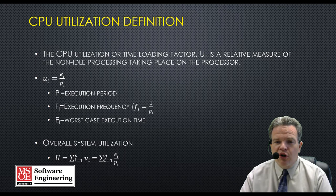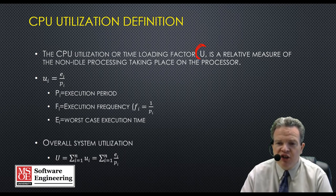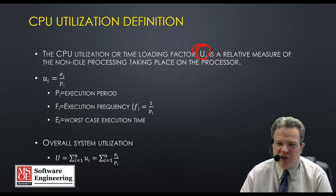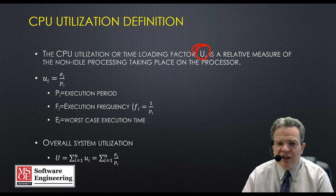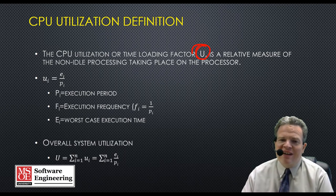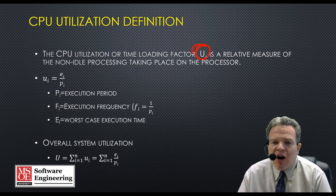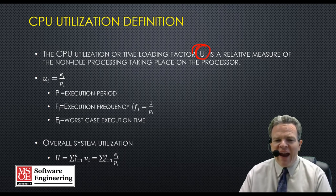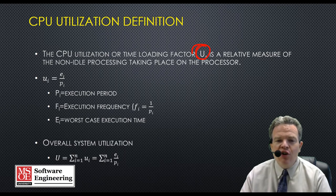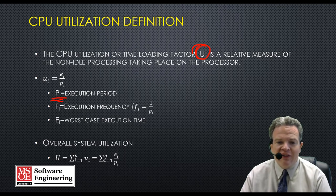The CPU utilization, or time loading factor, which we typically express as U, is a relative measure of the non-idle processing taking place on the processor. Essentially, utilization is the amount of time that the processor is not idle. On a task basis, when we have what are referred to as periodic tasks, we look at this as the execution period — how often it should execute — by looking at the period F sub i.